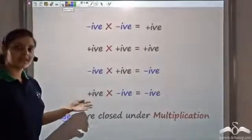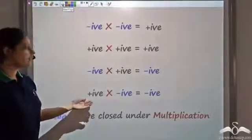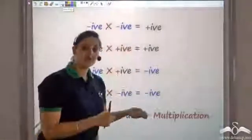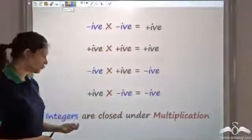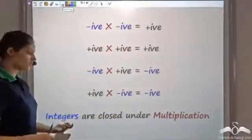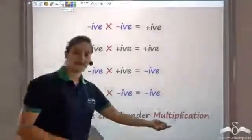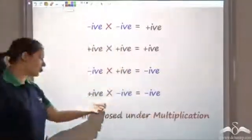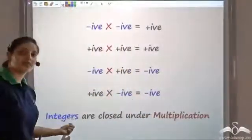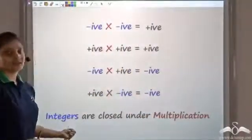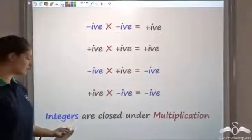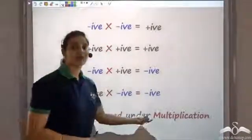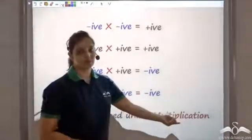Now these were the results. In fact, if you take any two integers and multiply them, the result of the multiplication gives back an integer. So we can say that integers are closed under multiplication.